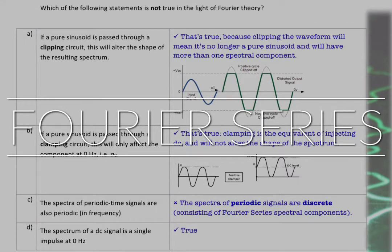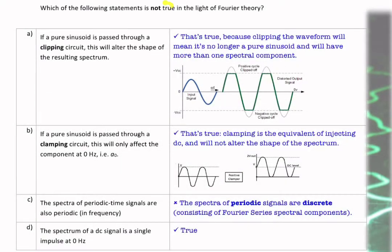This question is asking which of these statements is not true in light of Fourier theory. So part A says if you have a pure sine wave and you pass it through a clipping circuit, this will alter the shape of the resulting spectrum.